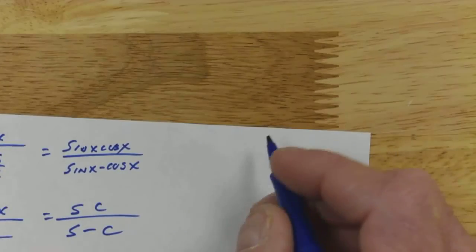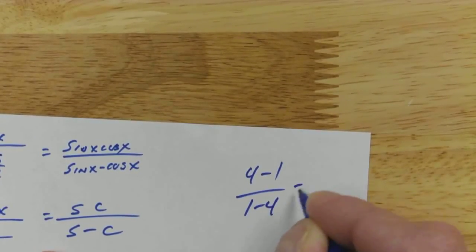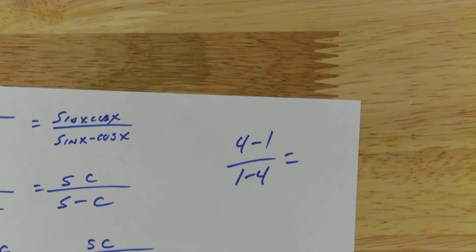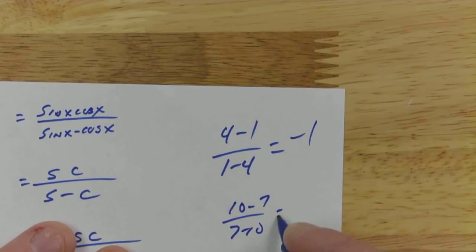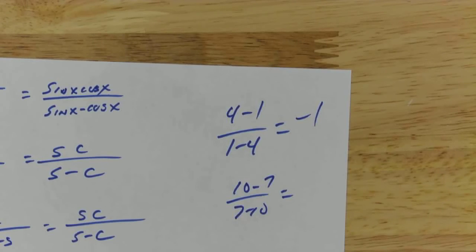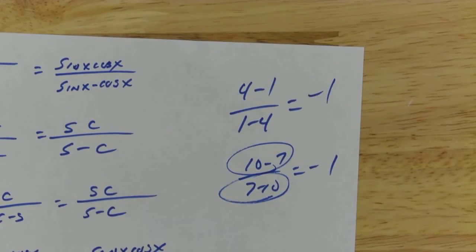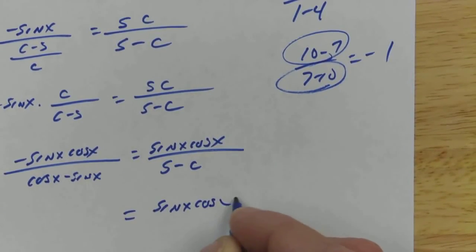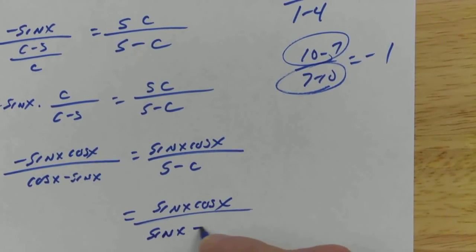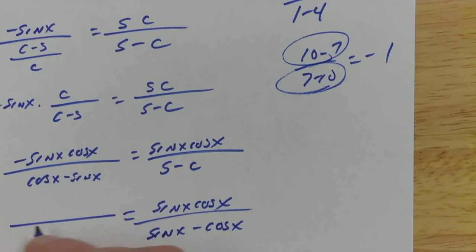Let's just go to the side. 4 minus 1 over 1 minus 4. What do I get? Negative 1. 10 minus 7 over 7 minus 10. Negative 1. So what we're seeing here is that when you flip-flop the order of a subtraction, the only thing that changes is the negative. So here's what I'm going to do. This one would be a good bonus, I think. Not a part of the meat of a quiz. Let's go ahead and take a negative out.